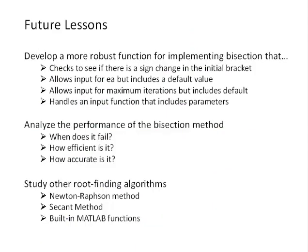Before we get to that video, I want to talk a little bit about where we go from here. Future directions for root problems in particular: we want to develop some more programming skills and make this into a more robust function for implementing the bisection method. We want to make sure that there is in fact a sign change in that initial bracket, because if not, then there is no root and the bisection method can't work. We also would like to allow the value of EA to be an input to the function, but we want to learn how to do that and still include a default value. That will involve a new MATLAB programming command that we will bring into our toolbox next week.